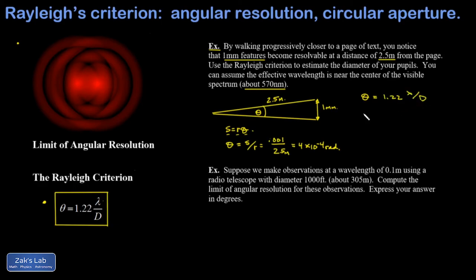This gives me 0.00174 meters, and if I express that in millimeters, that's 1.74 millimeters for the diameter of my pupils.